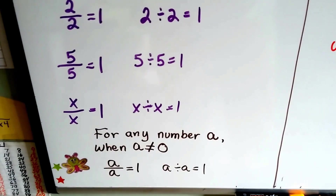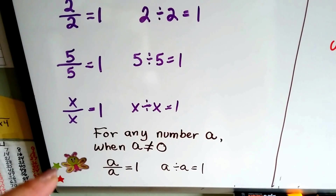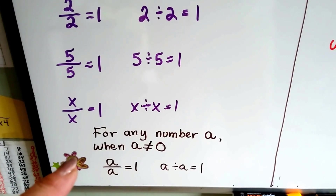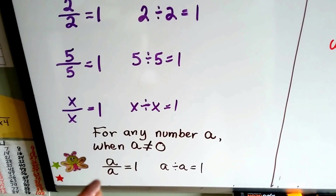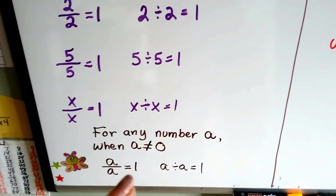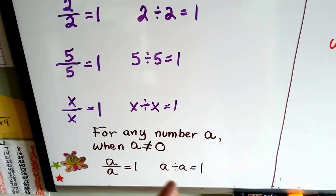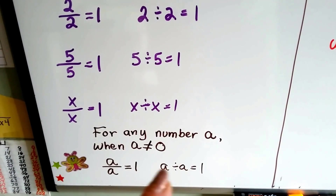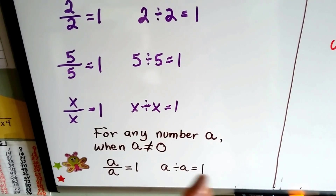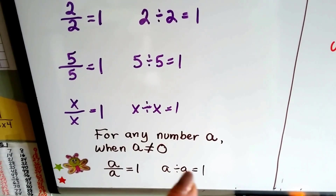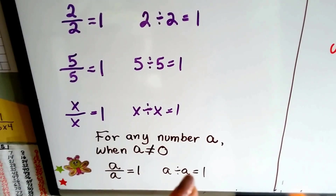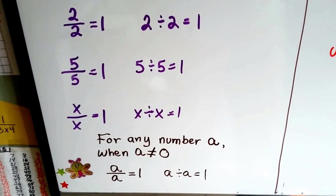So for any number a, as long as that a isn't zero, a divided by a is 1. Because when you have a number divided by itself, it's going to equal 1.